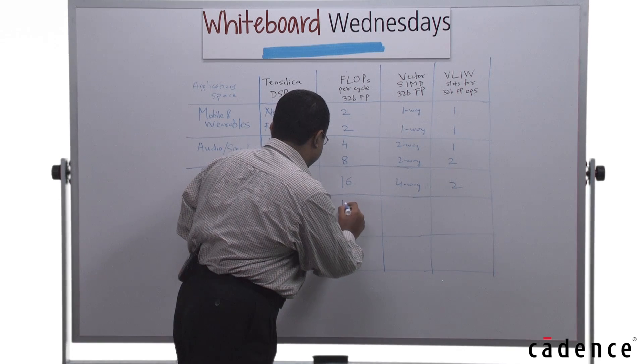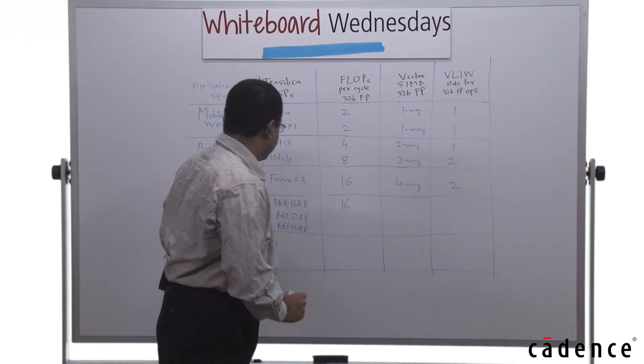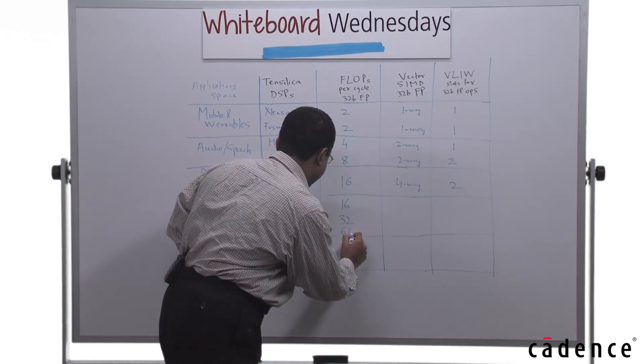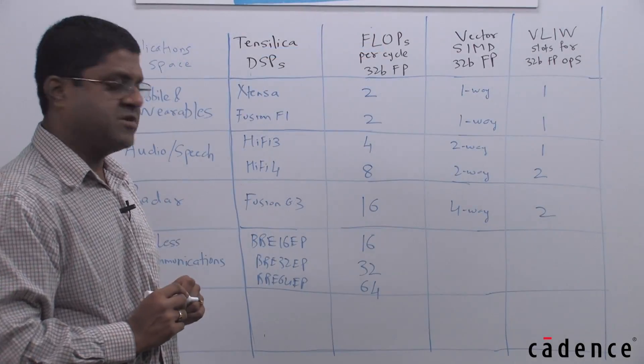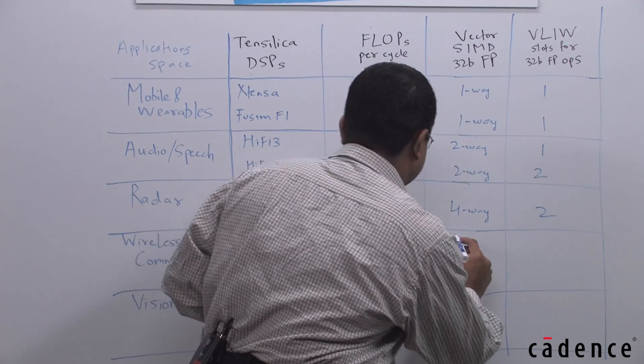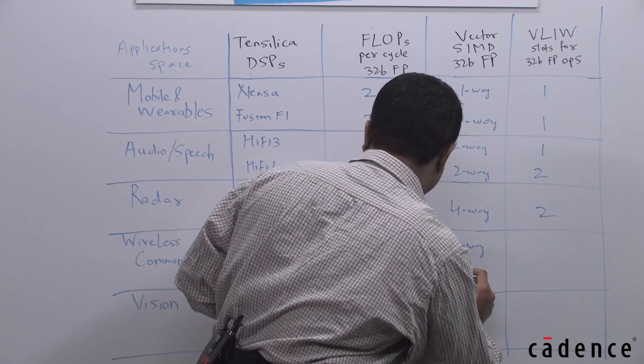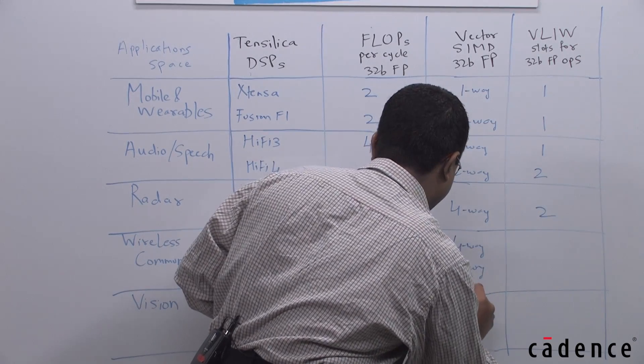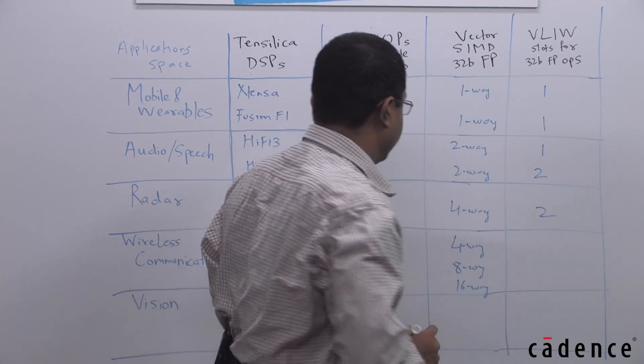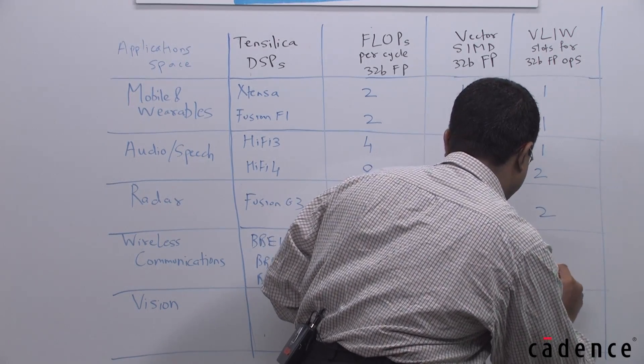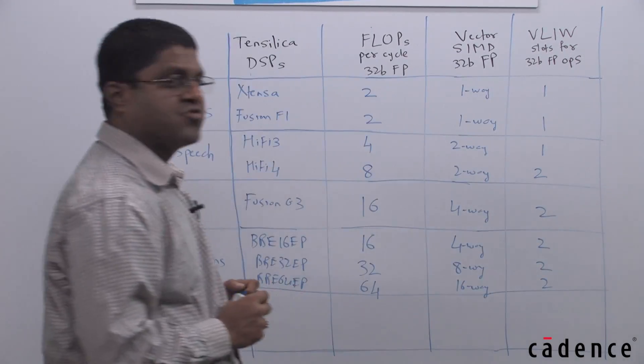These in terms of FLOPS per cycle, the BBE 16, 16 FLOPS per cycle, 32 for the BBE 32 EP, and 64 for the BBE 64. The 16 EP is a 4-way machine for 32-bit floating point, the 32 EP is an 8-way, and the 64 is 16-way. And each of these schedule their floating point operations in two slots.